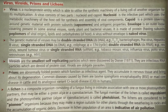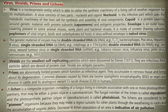Viroids are the smallest self-replicating particles, discovered by Diener in 1971. They are infectious RNA particles which are devoid of a protein coat. Viroids are obligate parasites.